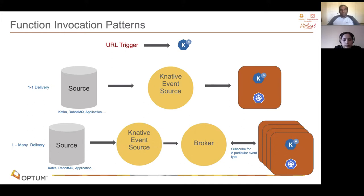There are two types of delivery. One is one-to-one delivery: take the data from the source and use the Knative event source to deliver directly to a Knative service or a Kubernetes service. In this case, it's tightly coupled between the source and the processor. Instead, if you have a buffer in between, it's better for processing because you're decoupling the source and the processing function, allowing you to do a lot more.